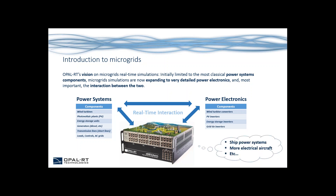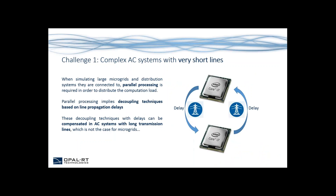One thing that is very important is how we can have a real-time interaction between those two groups of components. At Opal RT, we also consider that ship power systems and more electrical aircraft can be considered as microgrids, mainly because they bring the same type of challenges in terms of real-time simulation. The first challenge is that there are complex AC systems with very short lines that need to be simulated in real-time. When simulating large microgrids and distribution systems, parallel processing is required to distribute the computation load. However, parallel processing necessarily implies using decoupling techniques based on line propagation delays, and these delays cannot be compensated in microgrids since long transmission lines are typically not available.